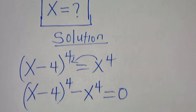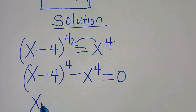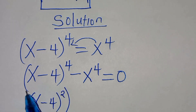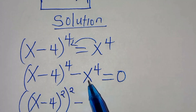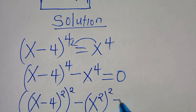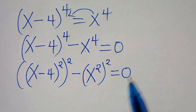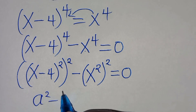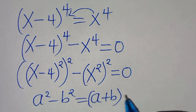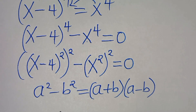We can express (x minus 4) to the power of 4 as (x subtract 4) squared, then raised to the power of 2, subtract x to the power of 4, which is (x squared) raised to the power of 2, equal to 0. This equation is in the form of a squared minus b squared, which is the difference of two perfect squares, expressible as (a plus b)(a minus b).